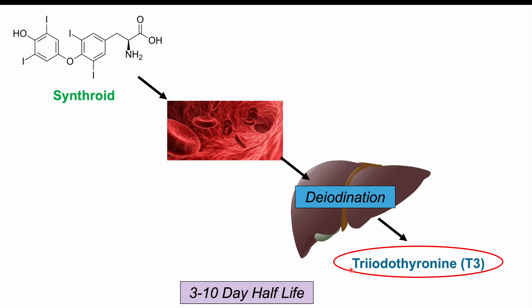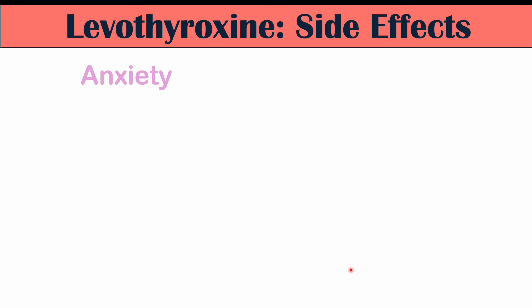There's a variable half-life with Synthroid depending on how much thyroid hormone you already have. With very severe hypothyroidism, the half-life is longer and the medication stays in your system longer. With hyperthyroidism or too much Synthroid, the half-life is shorter. Overall, the half-life varies anywhere between 3 to 10 days — this is how long it takes for half the medication to be removed from the body.